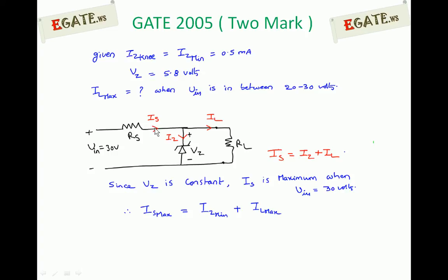We can expect maximum supply current which is coming from the input, and that is going to be divided into zener current as well as load current. We need to calculate maximum load current. From this diagram a simple equation can be written using current division rule: Is is equal to Iz plus IL.